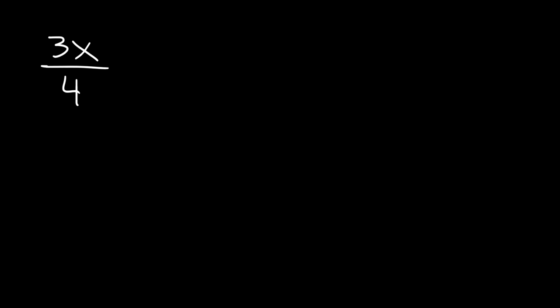In this video, we're going to talk about how to multiply algebraic fractions that contain variables and exponents. Let's start with the basics. Let's say if we have the fraction 3x divided by 4 multiplied by 5 divided by x. So how can we multiply and simplify these two fractions?